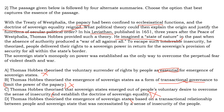Option D: Hobbes theorized the emergence of sovereign states based on a transactional relationship between people and the sovereign state, necessitated by a sense of insecurity. The transactional relationship between people and states emerged because of insecurity — people were overcome by insecurity, so it was necessary for them to have security, and they gave up their power to the government in return. This is a good option clearly giving what the passage says. So Option D is the correct answer.